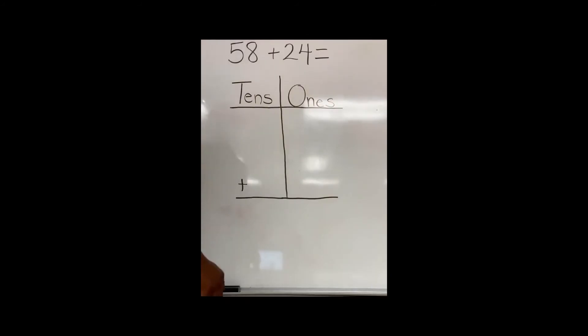For my last example, I have fifty-eight plus twenty-four. I see that I have five tens in fifty-eight and eight ones. I'll go ahead and place that down below. Five tens, eight ones. I'm adding twenty-four. Two tens, four ones.